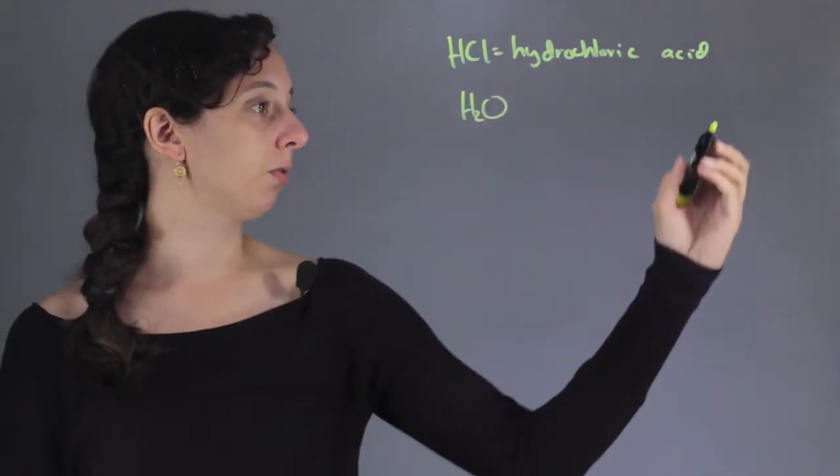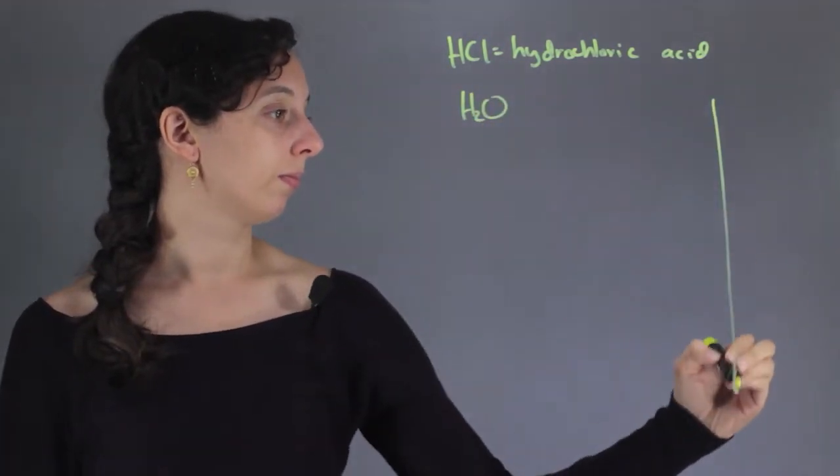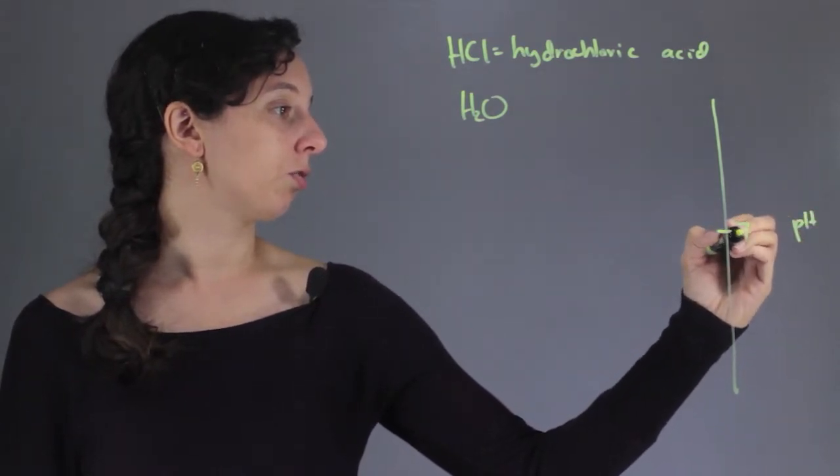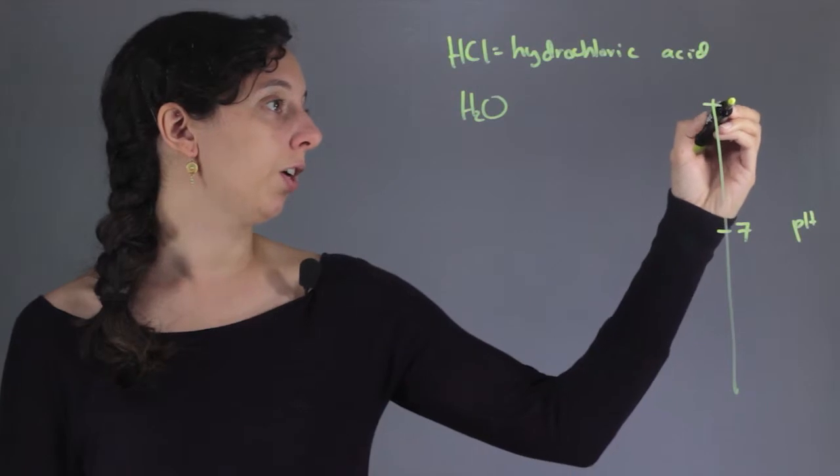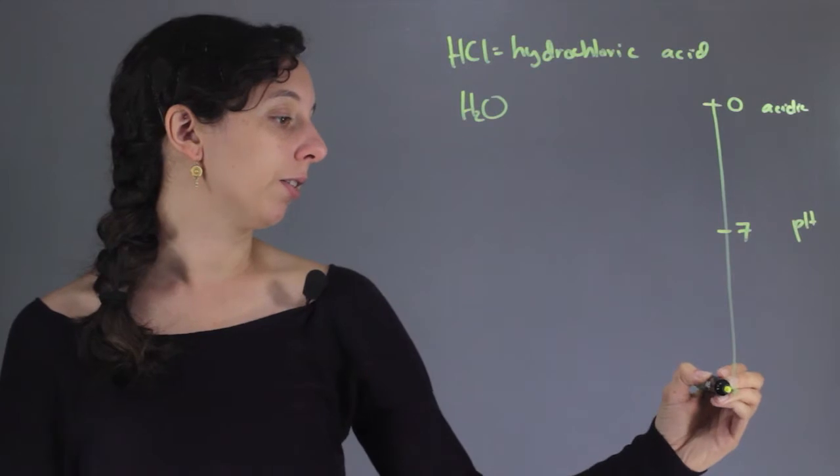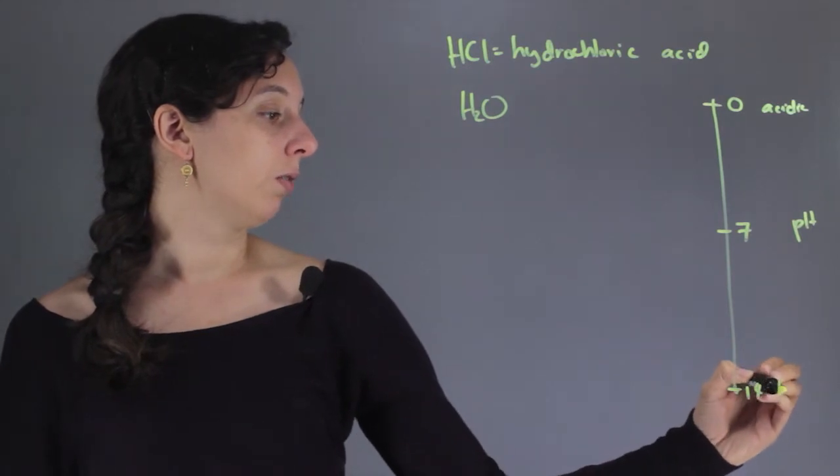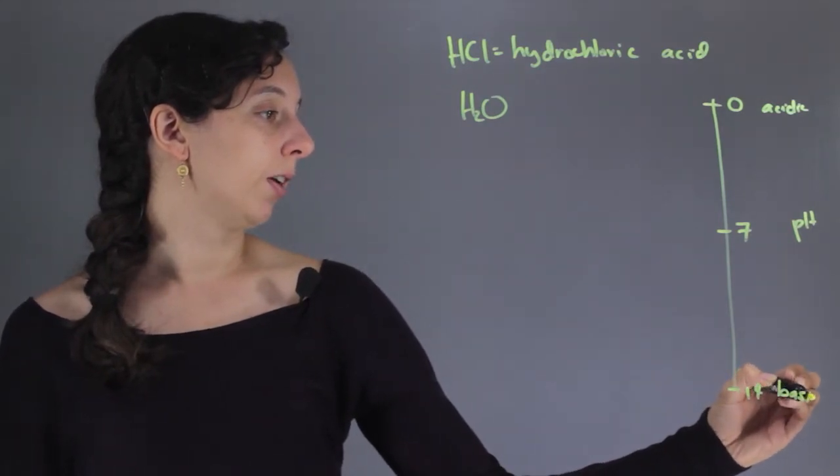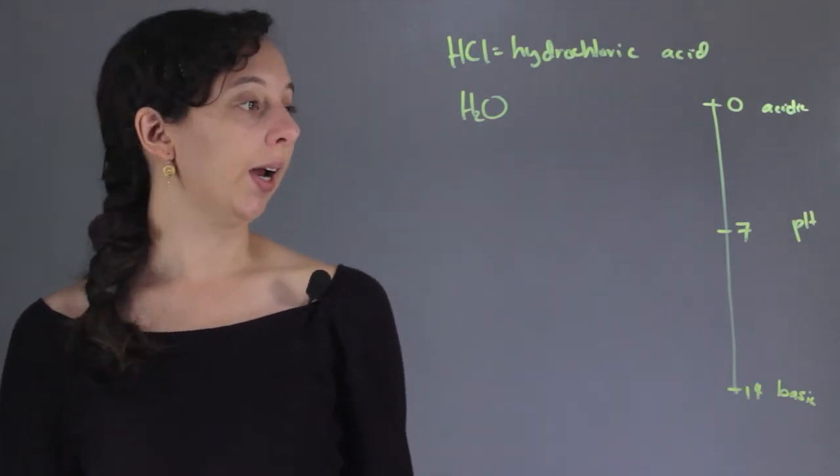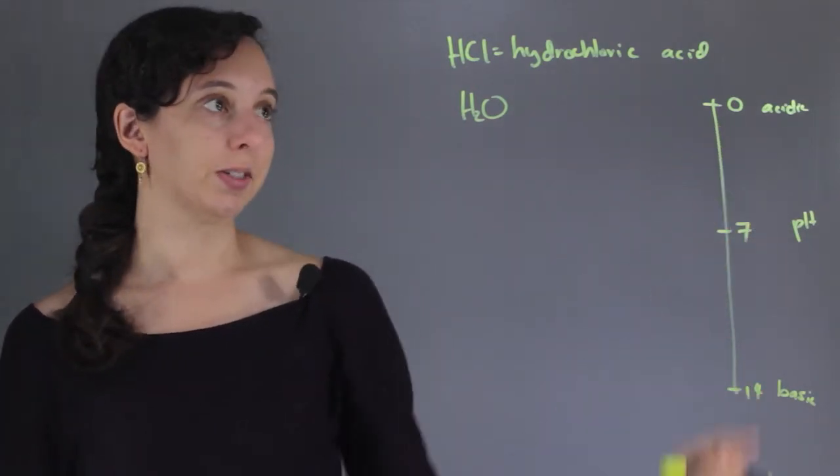So first of all let's just review the pH scale. Right in the middle you have 7 which is neutral, and then over here you have 0 which is very acidic, and down here at the other end you have 14 which is basic. So anything higher than 7 is going to be basic and anything lower than 7 is going to be acidic.